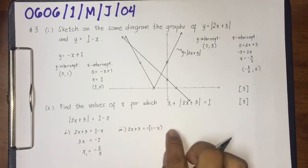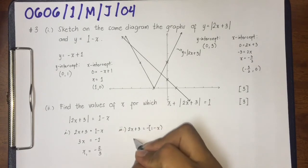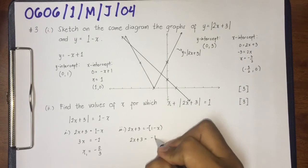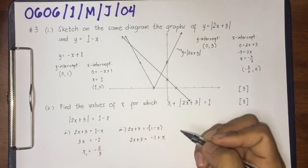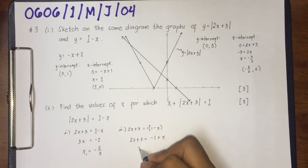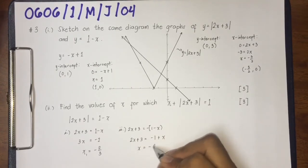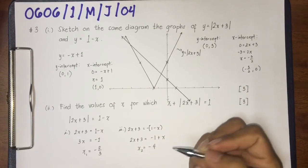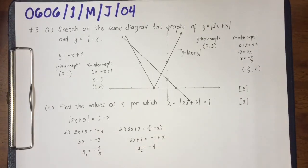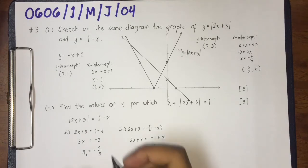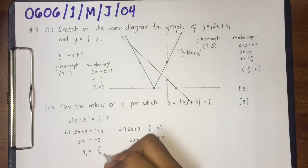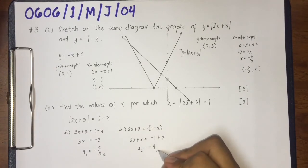Solution 2: 2x plus 3 equals the negative value of the expression 1 minus x. So 2x plus 3 equals negative 1 plus x. Combining similar terms gives x equals negative 4. Therefore the second solution is x equals negative 4. So the two algebraic solutions are x equals negative 2 over 3 and x equals negative 4.